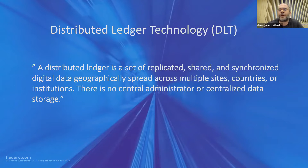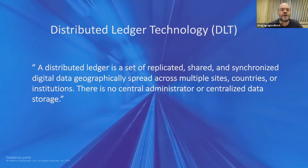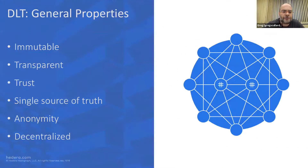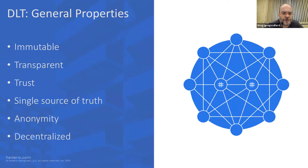Although you could argue that a private distributed ledger has some level of central administration. It's a distributed set of computers that take part in various activities. They typically have a number of properties. One is immutability, meaning that once transactions exist within a ledger, they cannot be changed by anybody. We'll talk about immutability in the context of Hedera Hashgraph later on. Transparent — all members in the network have access to the information recorded in the ledger.